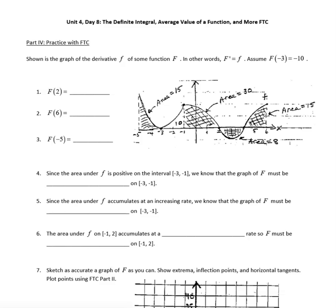In this practice problem, we are going to work with the fundamental theorem of calculus. We're given this graph here that does not have an equation intentionally, but we are given certain areas. Notice they're called areas, not integrals, so they're all signed positive, and we will have to worry about the section underneath the x-axis, which will eventually have to be signed negative when we treat it as an integral instead of area.